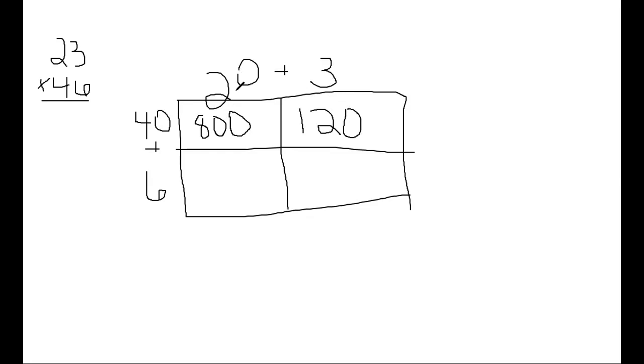In this box, we have our 20 coming down and our six coming across. So 20 times six. Two times six is our basic fact, which is 12, and we add one zero to the end. So 20 times six is 120.